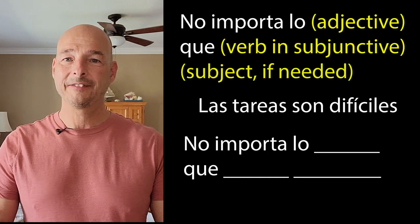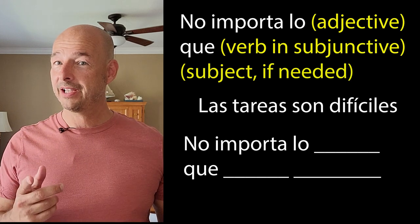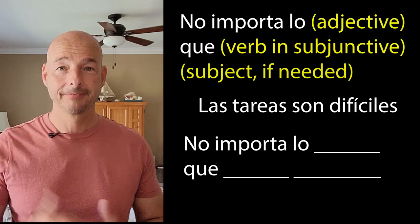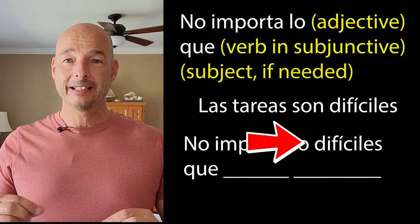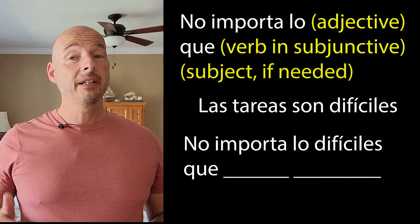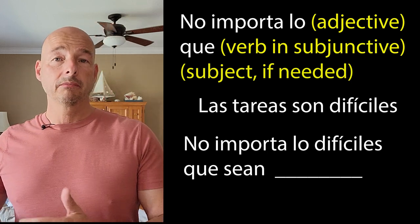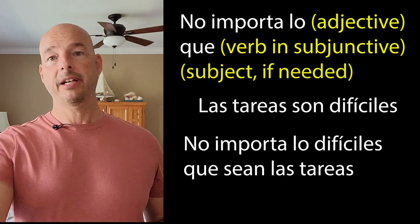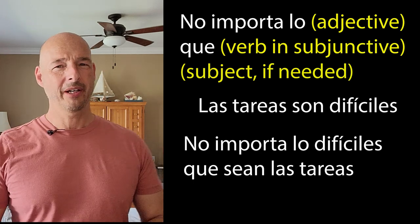Now let's take that sentence and make it plural: Las tareas son difíciles — the tasks are difficult. How's this going to change things? It's not going to be too bad. We're going to pop in our adjective — in this case it agrees in number and gender, so it's plural: difíciles. After 'que,' we put our verb in the subjunctive. Here it's not, but the subjunctive would be 'sean.' So we put 'sean' in there, then our subject: las tareas. Put it all together: No importa lo difíciles que sean las tareas. This isn't too bad, right?